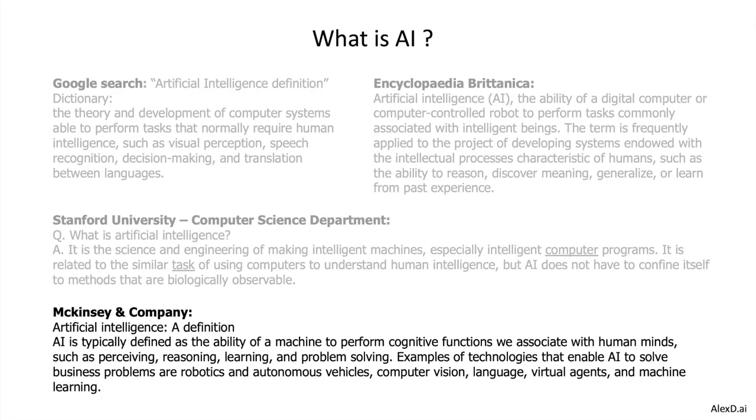Let's look at one last definition, from the big consulting company McKinsey. McKinsey's definition for artificial intelligence is that it is the ability of a machine to perform cognitive functions associated with the human mind, such as perceiving, reasoning, learning, and problem solving. Examples include autonomous vehicles, virtual agents, and the use of machine learning.